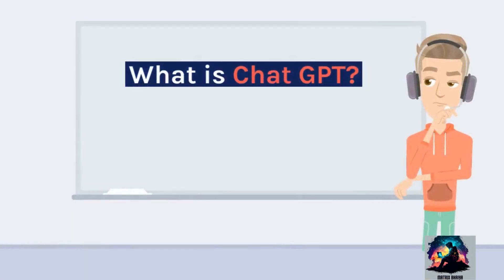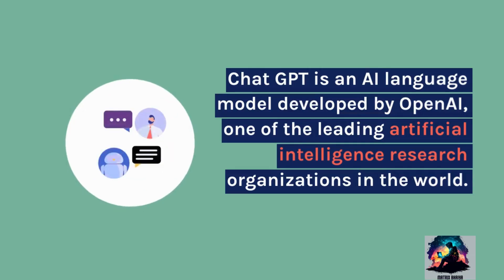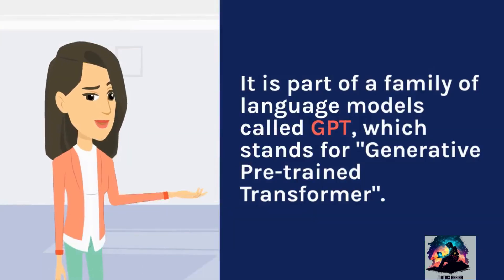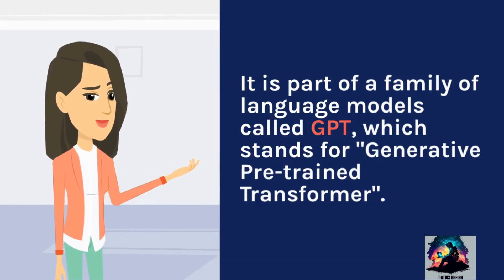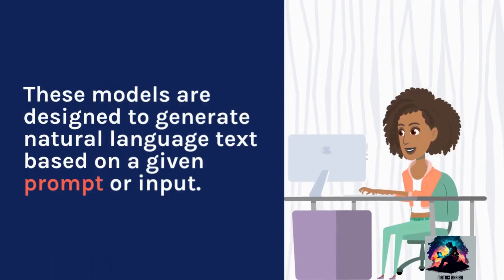What is ChatGPT? ChatGPT is an AI language model developed by OpenAI, one of the leading artificial intelligence research organizations in the world. It is part of a family of language models called GPT, which stands for Generative Pre-Trained Transformer. These models are designed to generate natural language text based on a given prompt or input.